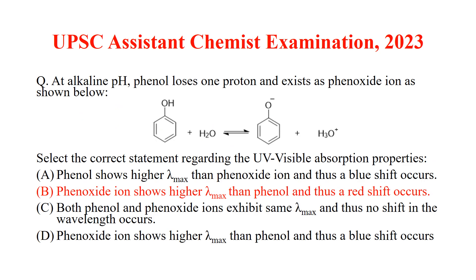The next question is: at alkaline pH, phenol loses one proton and exists as a phenoxide ion. Select the correct statement regarding the UV-visible absorption properties. The answer is option B — phenoxide ion shows higher lambda max than phenol, and thus a red shift occurs. In the case of phenol, there are two lone pair electrons on the oxygen atom, whereas in phenoxide ion there are three lone pair electrons on the oxygen atom. These three lone pairs can interact with the pi system more effectively, so a red shift is observed.